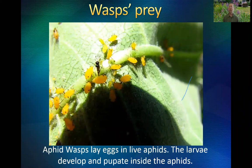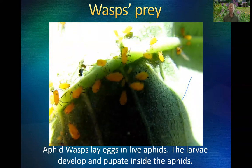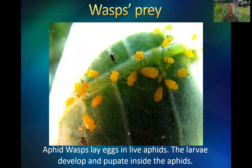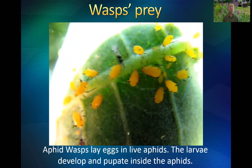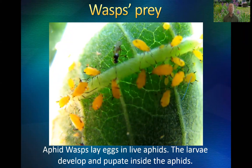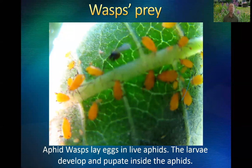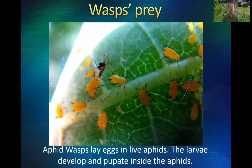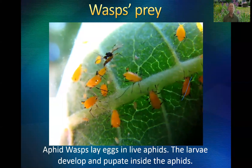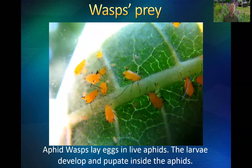There's a whole group of wasps too small to be noticed by most people. This is an aphid wasp stabbing eggs into aphid bodies on the bottom of a milkweed leaf. There are quite a few species of aphid wasps going after a variety of different aphids. Each egg hatches a larva that eats the aphid from the inside, and the aphid's body then becomes the pupa for the wasp to pupate, ultimately allowing new adults to emerge and start the cycle again.